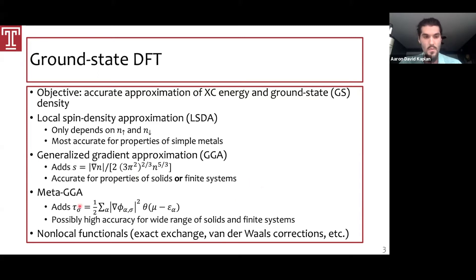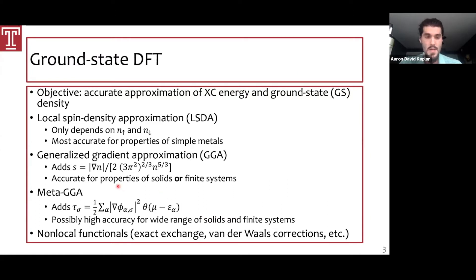Above GGA are the meta-GGAs, which include the one-body kinetic energy densities and are semi-local in both the density and the orbital — the Kohn-Sham orbitals and their gradients are required. These are doubly semi-local, whereas a GGA is only semi-local in the density. With this added information, a meta-GGA can give high accuracy for a very wide range of solid and finite systems, and also embeds the GGA below it — a nesting doll system. Above these are non-local functionals like exact exchange and van der Waals corrections, ranging from first principles to purely empirical models.